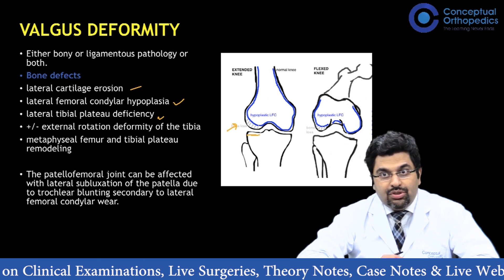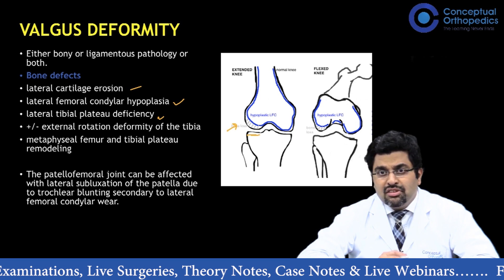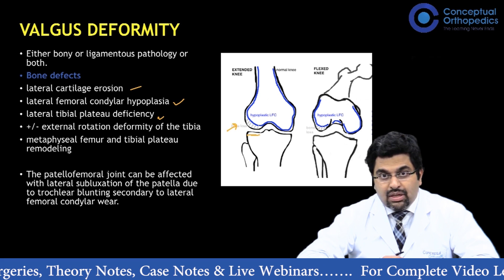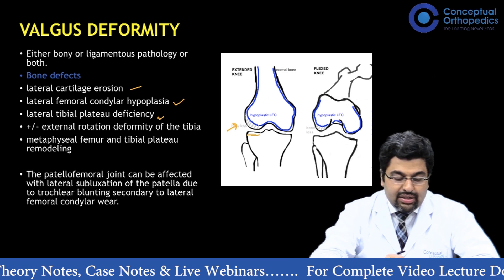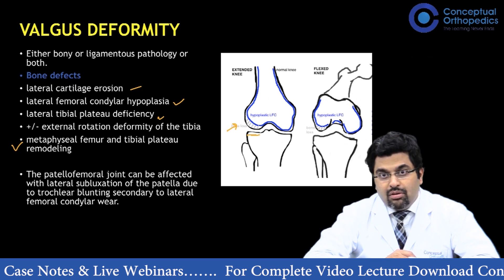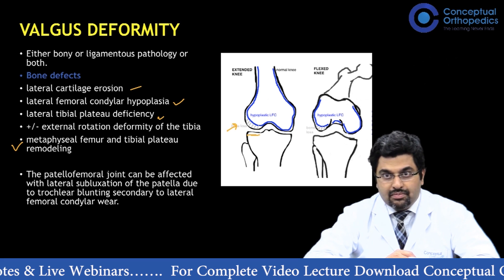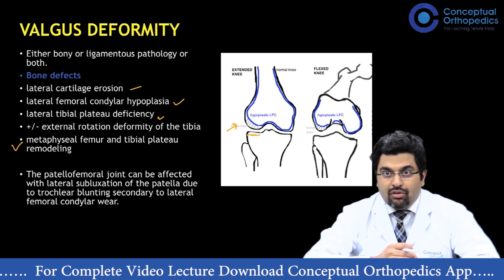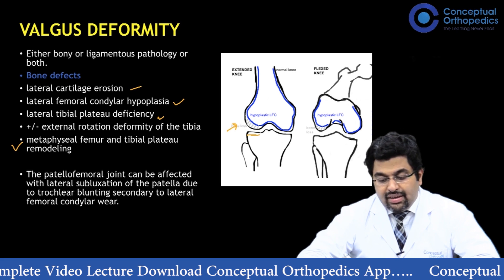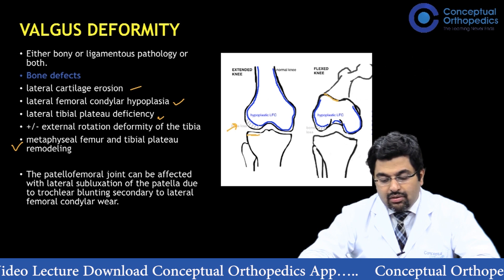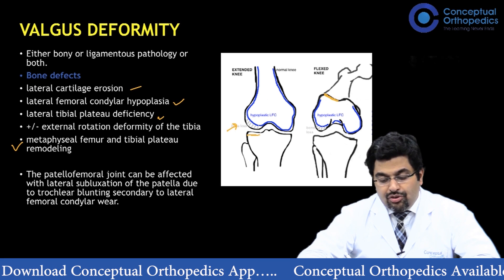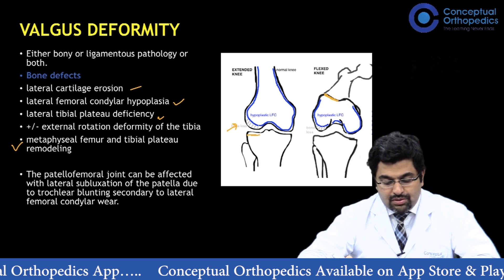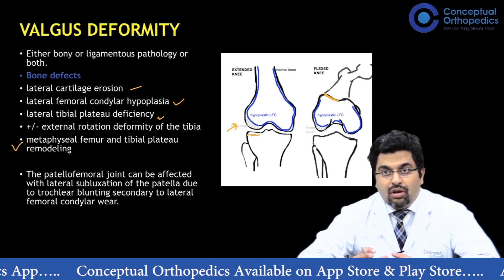There can also be an external rotation deformity of the tibia, commonly seen in severe deformities. If these deformities become severe, they can lead to metaphyseal femoral and tibial plateau remodeling. Additionally, hypoplasia of the lateral femoral condyle can affect the trochlea — if the trochlea is blunted, it can lead to patellofemoral subluxation problems. These are the key bony problems of a valgus deformity.